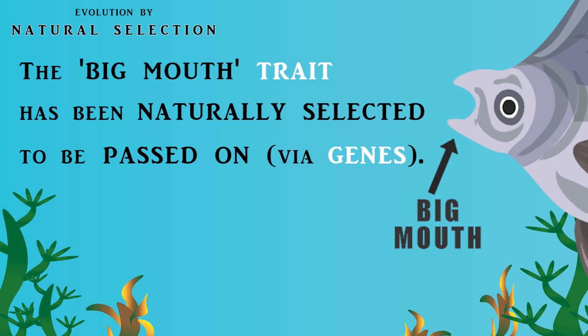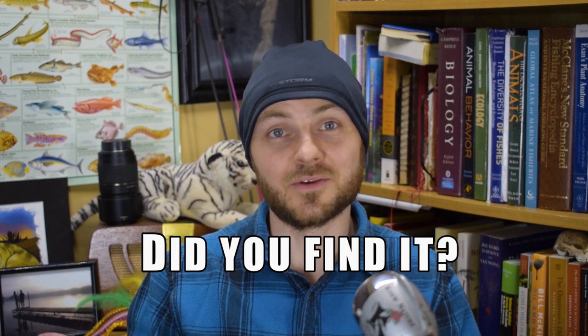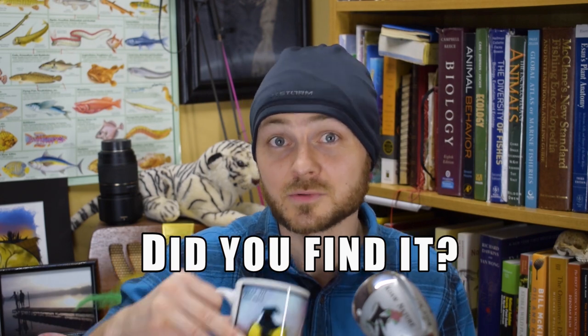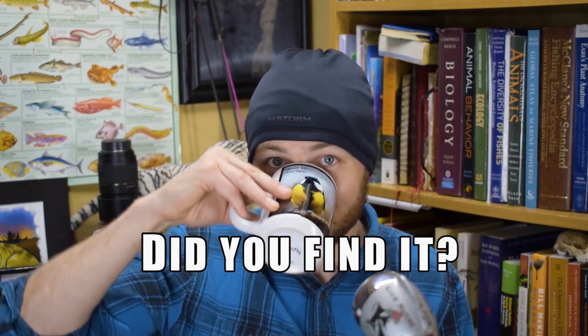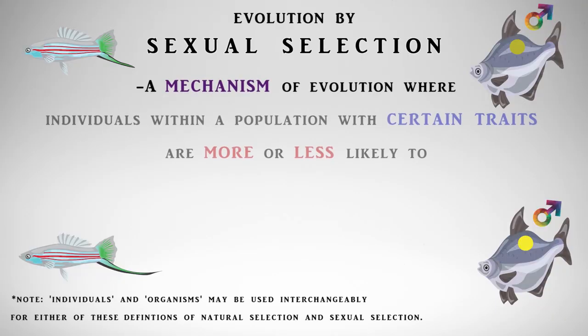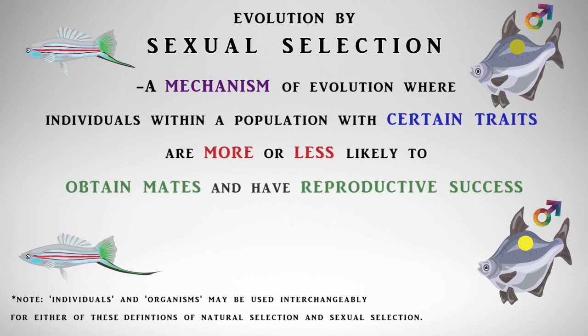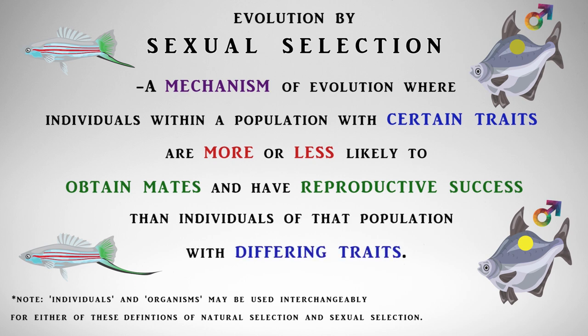The big mouth trait has been naturally selected to be passed on because it is better suited for the environment than the small mouth trait. Now let's move to sexual selection. Sexual selection is a process where individuals within a population with certain traits are more or less likely to obtain mates and have reproductive success compared to other individuals within that population with differing traits.